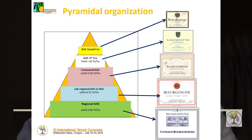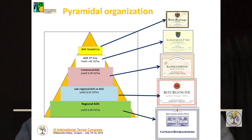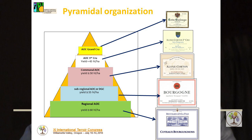The organization of AOC in France is generally based on a pyramidal organization, such as the Burgundian model. The pyramidal organization is a hierarchical organization between AOCs with the same type of products, with production areas nested and with limits more and more restricted and conditions of production more restrictive up to Grand Cru.